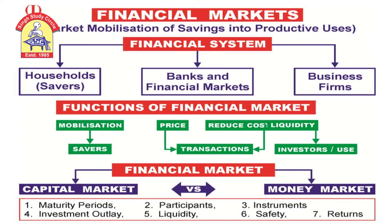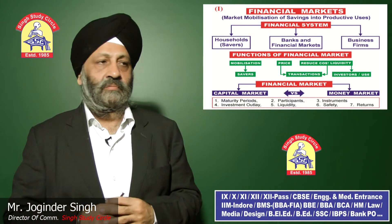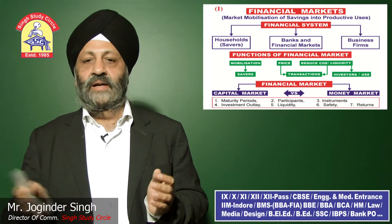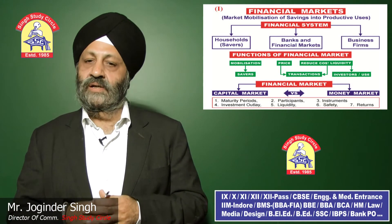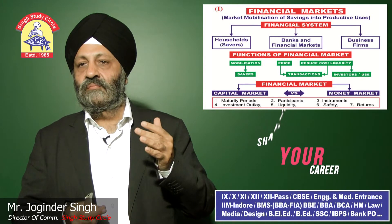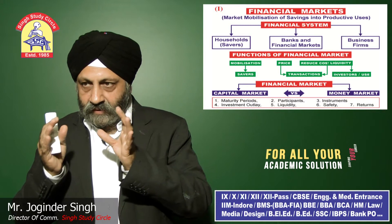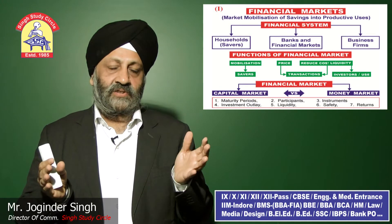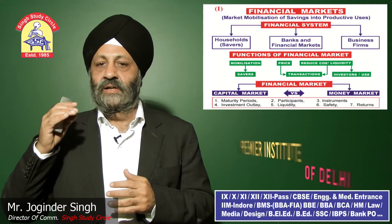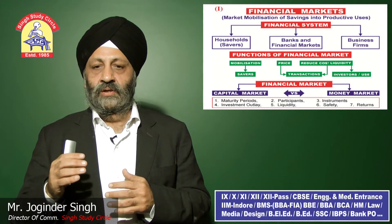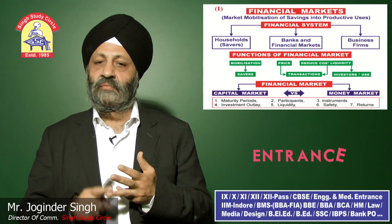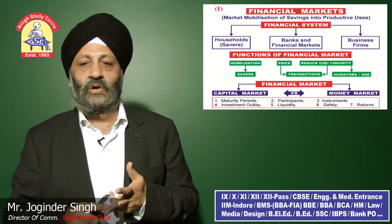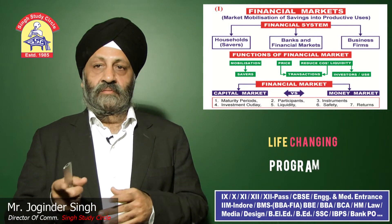The purpose of financial markets is mobilization of savings into productive uses. The financial system involves households and business firms, both controlled by banks and financial markets. The four functions of financial markets are: first, mobilization of savings; second, fixing of price between savers and investors; third, reducing the cost of transaction; and fourth, maintaining liquidity.